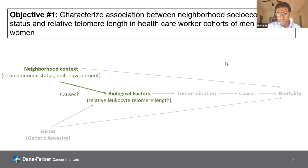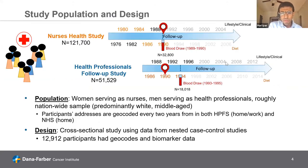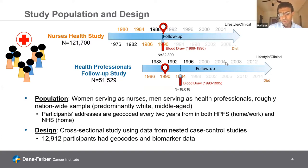The first project characterizes the association between neighborhood socioeconomic status and relative telomere length in healthcare worker cohorts of men and women. We used data from the Nurses' Health Study Prospective Cohort and the Health Professionals Follow-Up Study Cohort — studies conducted at the Harvard Chan School of Public Health going back decades. About 10 years in, blood draws were done in a subset of the population. The women are in the Nurses' Health Study and the men are in the Health Professionals study, reflecting a largely nationwide sample that is predominantly white and middle-aged.